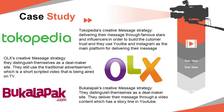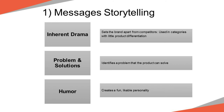Message storytelling consists of nine categories. First is inherent drama — setting the brand apart from competitors; for example in Indonesia, people say they want to buy 'Aqua' even when the product is just mineral water. Second is problem and solution — identifying a problem the product can solve, like Inza as a medicine for fever. Third is humor — creating fun or expressing things in a funny way, like inline Torii cheese crackers that went viral because of a funny dance in the advertisement.